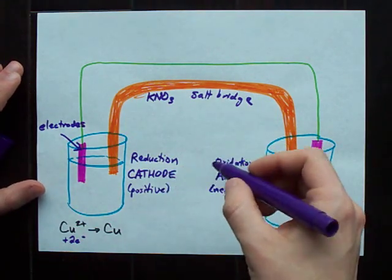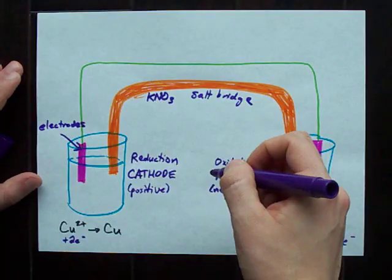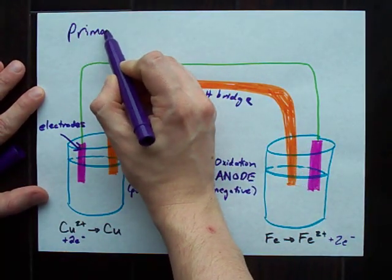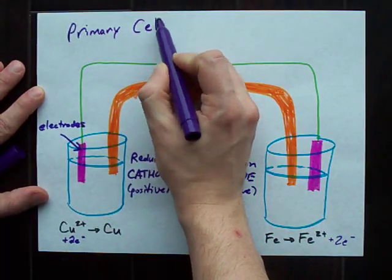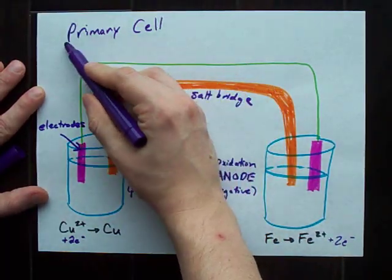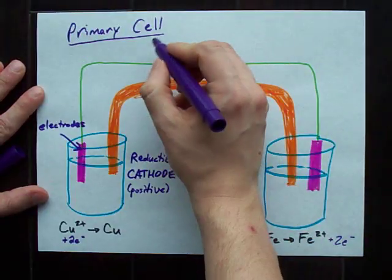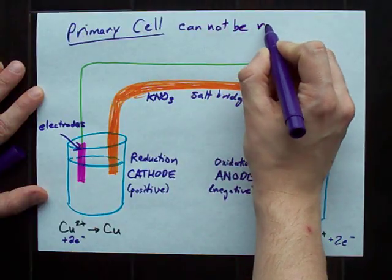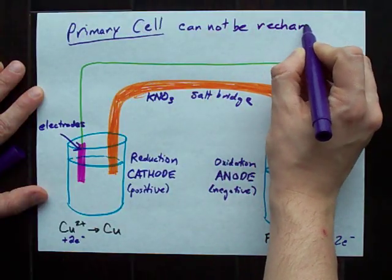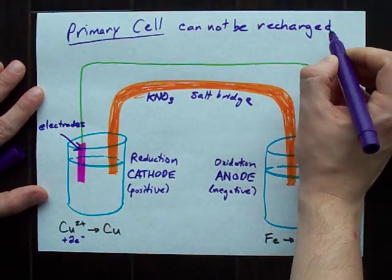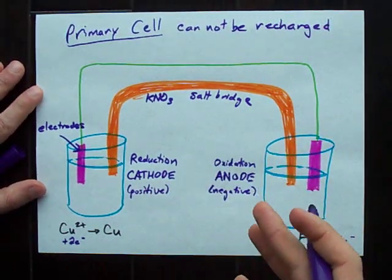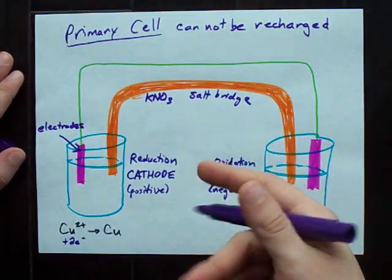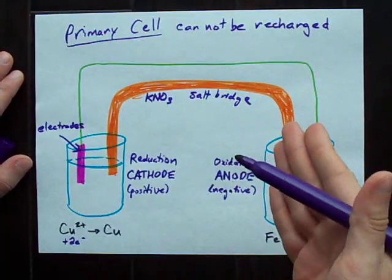Based off of this, we have a primary cell. A primary cell is a setup just like this if it cannot be recharged. If it can be recharged, it gets the name secondary cell. The best analogy is that AA batteries are often primary cells, but the rechargeable ones are secondary cells.